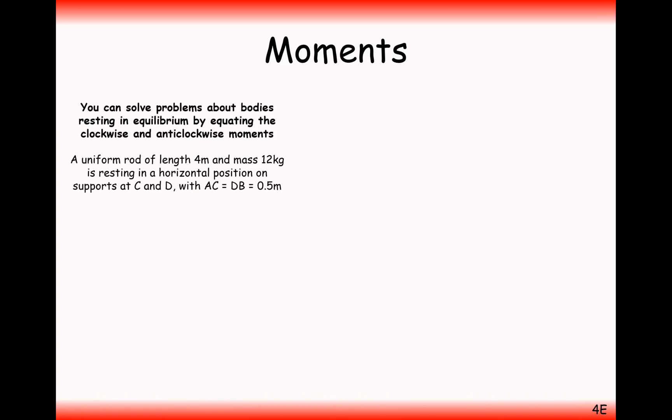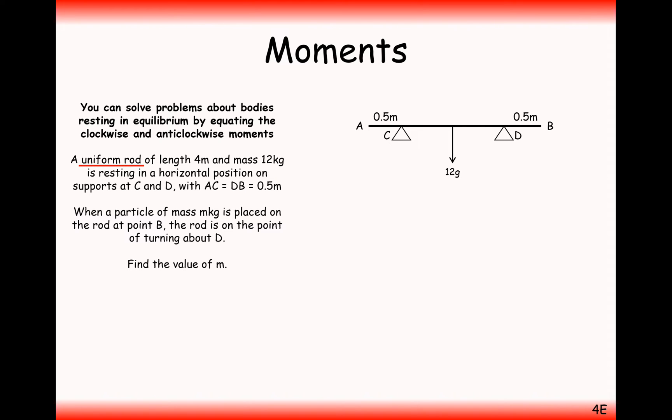Same moment stuff as we've been looking at before, same two strategies we're going to be using to solve these problems here. In this problem, we have a uniform rod, length 4 metres, mass 12 kilograms, resting on pivots 0.5 metres away from each end. Uniform rods will mean the mass will be in the centre. This time we have a mass that's been placed on the right-hand side. We don't know how big this mass is, but we are told that the rod is on the turning point about D. What does this phrase mean, and how does it affect our moments diagram here?